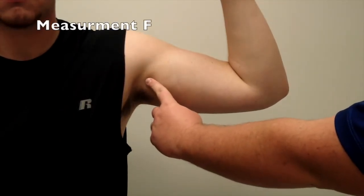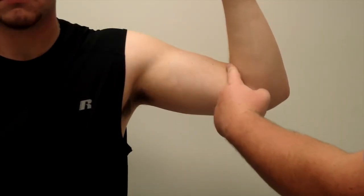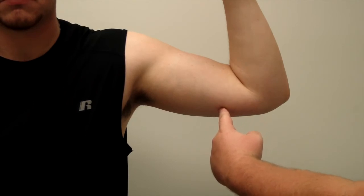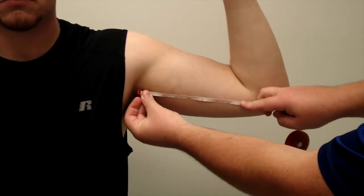Measurement F. Measure the distance from the axilla, or armpit, to the crease created by the contact between the bicep and the forearm when the arm is flexed.